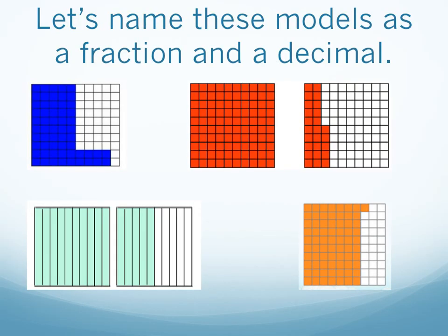Let's name these models as a fraction and a decimal. Take a look and give them a shot. In this first picture, I count fifty-eight blue squares, so that gives me fifty-eight hundredths as a fraction and zero point five eight as a decimal.